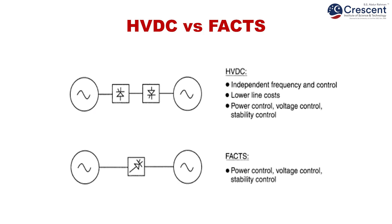HVDC versus FACTS: HVDC offers independent frequency and control, lower line cost, power control, voltage control, and stability control. In HVDC, AC is converted to DC on one side, the power is transferred as DC, and then at the receiving end it is converted back to DC to AC. In the case of FACTS, power control, voltage control, and stability control are also possible, though HVDC is a little bit more costly in terms of specific cost.